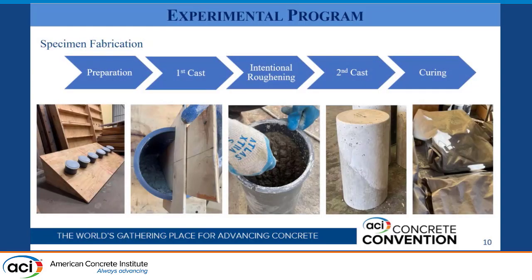Here is the general procedure for fabricating these slant shear specimens. We start with a cylinder mold attached to wooden stands, which helps achieve the cold joint inclination of these specimens. We first cast the substrate to ASTM standards, using a wooden gauge to ensure consistency of the interfacial level. We then apply intentional roughening to the substrate and finally cast the overlay after the specified casting age duration. All specimens were cured for a period of seven days.